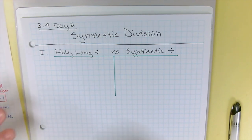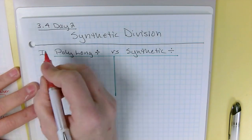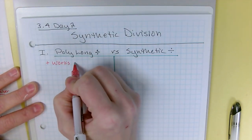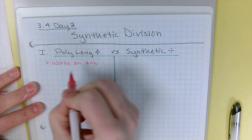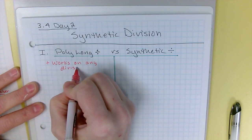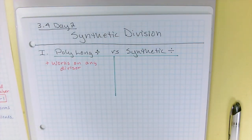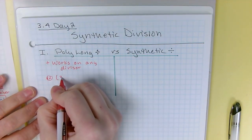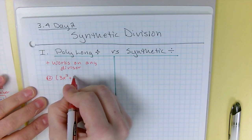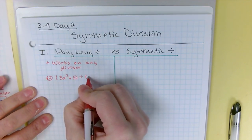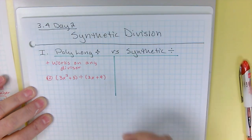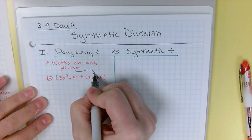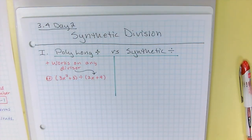So polynomial long division, one of the biggest pluses is that poly long works on any divisor. There's no limit to what you can have for divisor. So for example, with poly long, we can take 3x² + 3 divided by 2x + 9, and it doesn't really matter what the divisor looks like, it's still going to work.